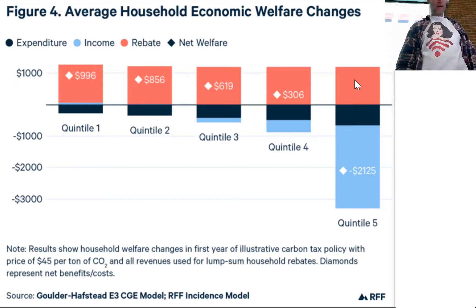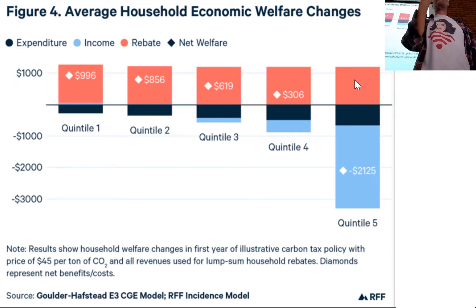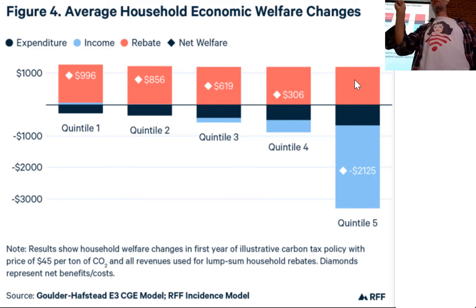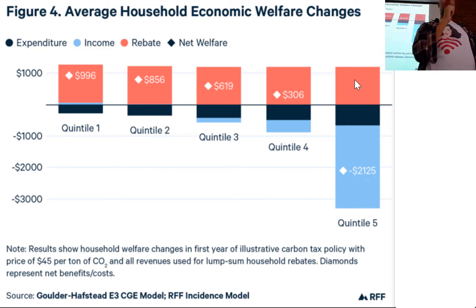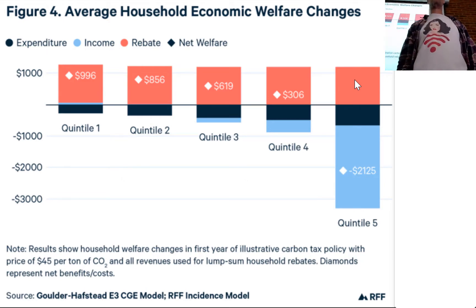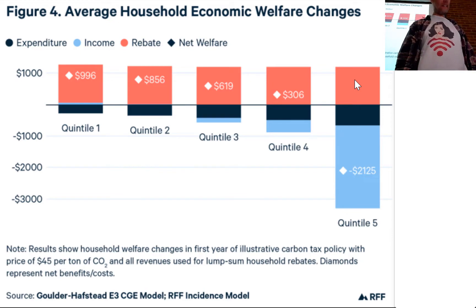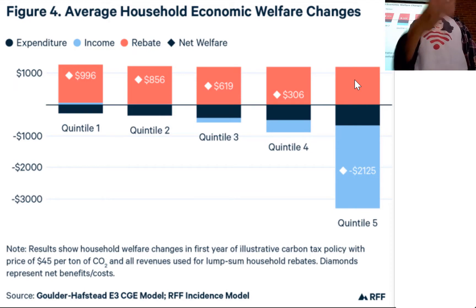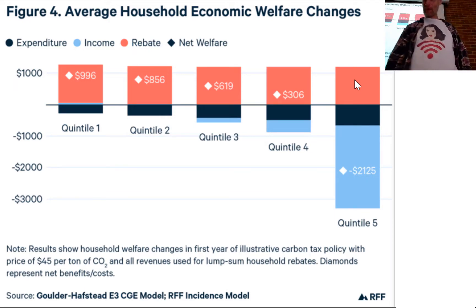Two takeaway lessons on incidence: one, don't just look at the expenditure side, but also look at the income side. And second, everything is contingent on how the climate policy is designed. There's a lot of political leeway to design it in a way we might agree with, but also in a way we might disagree with.